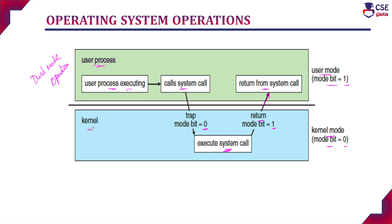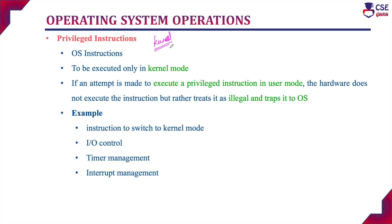One mode is user mode and the second is kernel mode. Both modes execute with the help of interrupts — that is why the modern operating system is an interrupt-driven process. Whatever instructions are executing within the kernel mode, we call them privileged instructions or operating system instructions. These operating system instructions should not execute in user mode — they will execute only in kernel mode. If an attempt is made to execute these privileged instructions in user mode, the hardware will not allow it, and immediately an illegal trap message will be sent to the operating system.